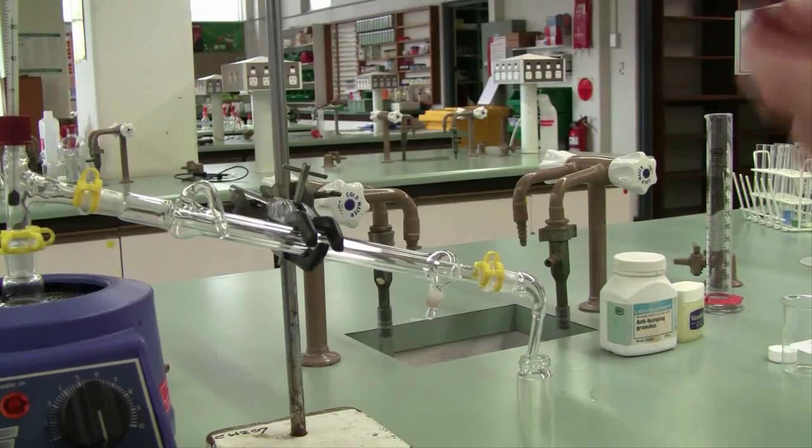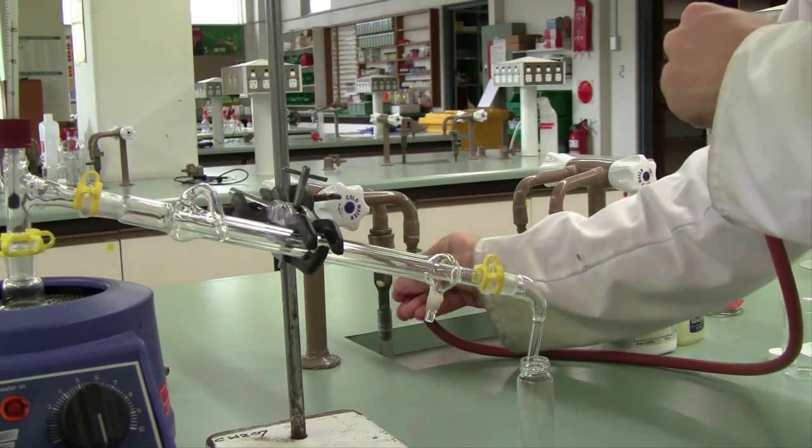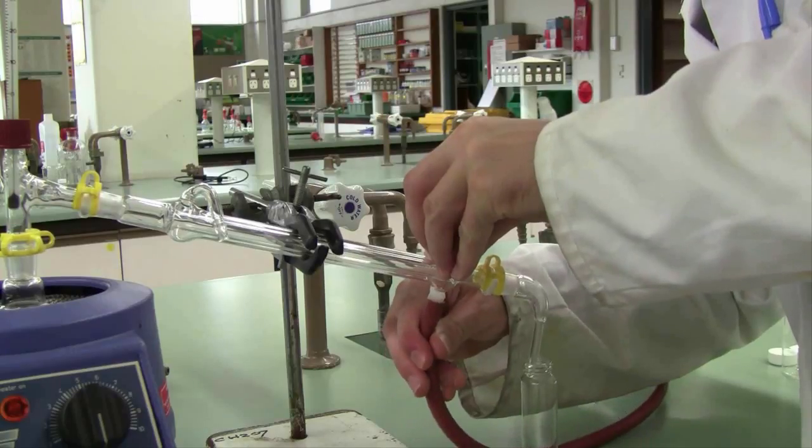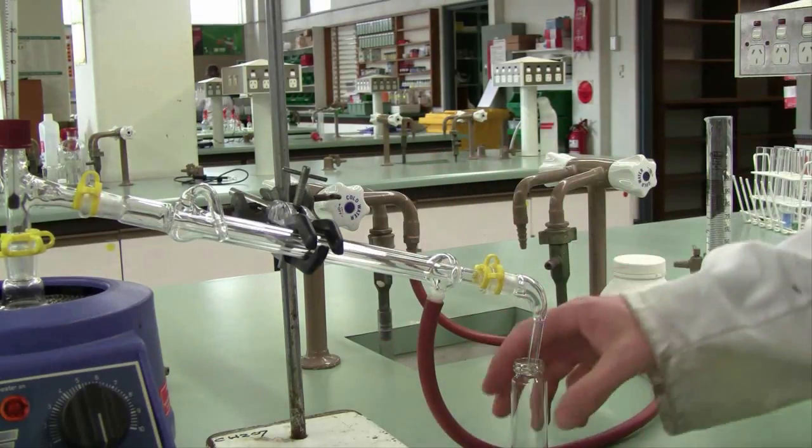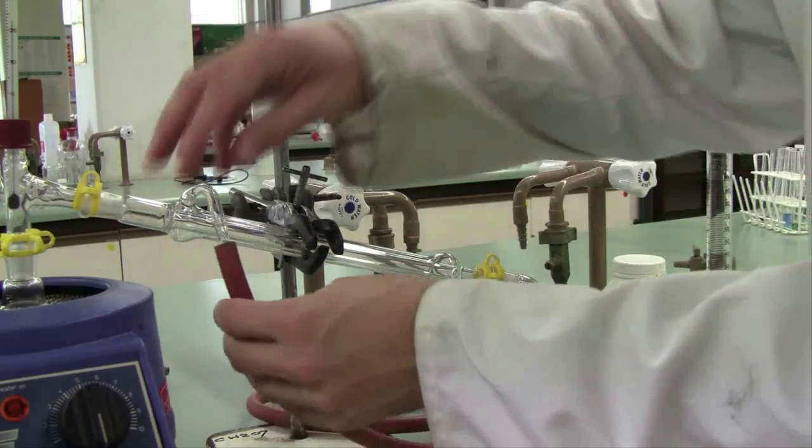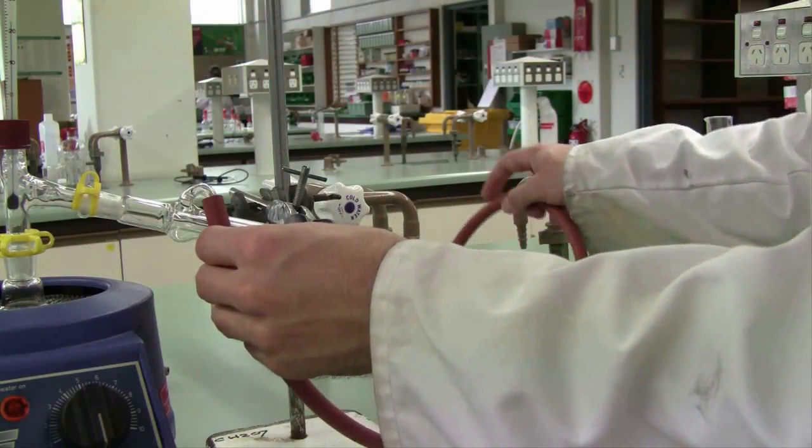Now for the plumbing to ensure that your condenser stays cool. First of all, connect one piece of tubing to the tap and then connect the other end of that to the bottom end of the condenser. You want the water to go into the bottom of the condenser and then fill upwards. Then collect your second piece of hosing, attach one end to the top of the condenser, and then channel the other one back into the sink so that it runs back down the drain.